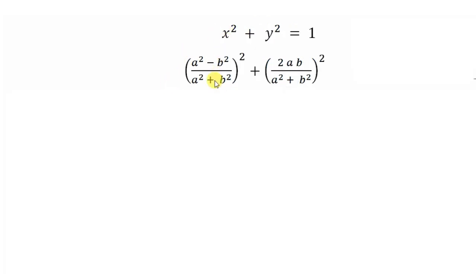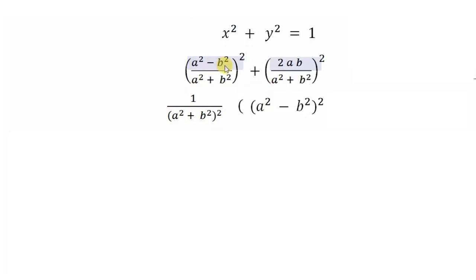I can see that (a² + b²) is common in both terms. Taking the common factor outside: x² + y² = 1/(a² + b²)² · [(a² - b²)² + (2ab)²].